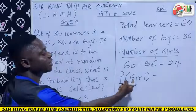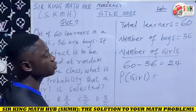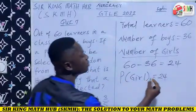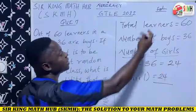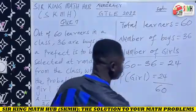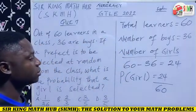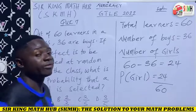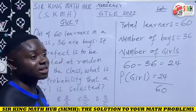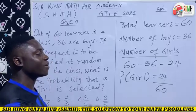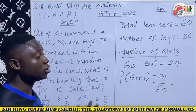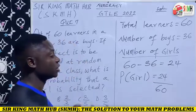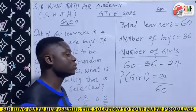The probability of selecting a girl is equal to the number of girls, which is 24, divided by total learners, which is 60. Now, since our answer is a common fraction, our final answer must always be in the lowest form. And you can see that 24 out of 60 is not in the lowest form, so we need to reduce it to the lowest form.